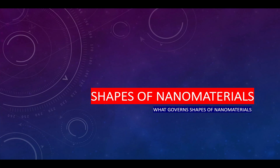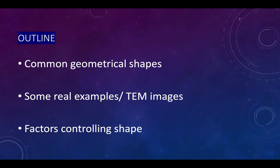Shapes of Nanomaterial. In this topic, we will look at the different shapes in which nanomaterials can be made — a general overview — and what factors can be helpful in governing the shape of nanomaterials into a desired form. We will look at some common geometrical shapes in which nanomaterials are typically prepared, get some ideas from real TEM images, and discuss the factors helpful in controlling or preparing a particular shape of nanoparticles.